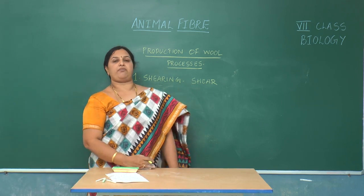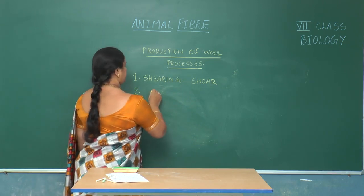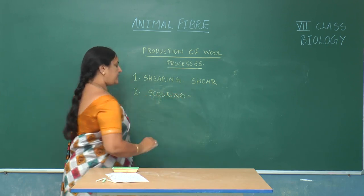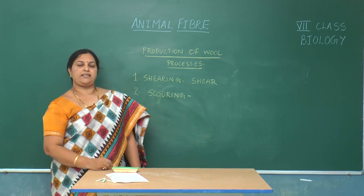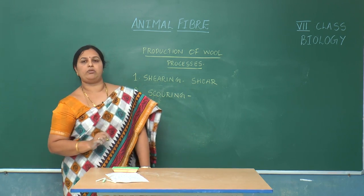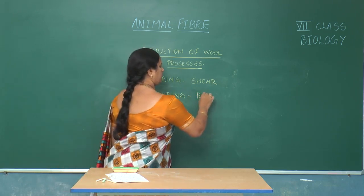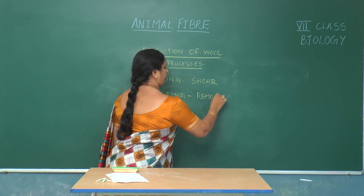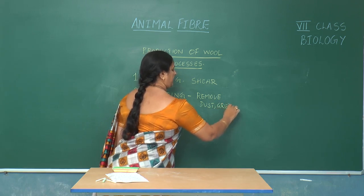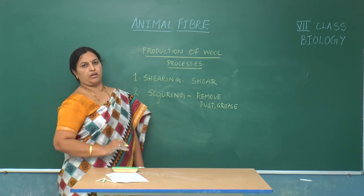After separation of hair from these animals, they are subjected to the next step, that is scouring. In this method, the hair is dipped in big tanks containing water and chemicals, mainly to remove dust, grease, and dirt. So, removal of dust and grease from the hair is done in the second step, scouring.